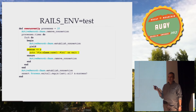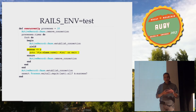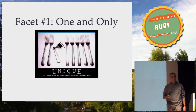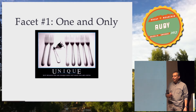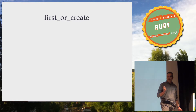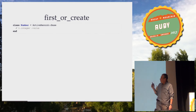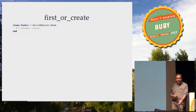Let's look at the first facet — the simplest one. This is how you can guarantee that records in your database table are unique by some value. Rails provides a couple of means to do this. The first is first_or_create, or its now-duplicated twin brother find_or_create_by. To test this, we will create a simple model called Number with one attribute called value, and run a simple test.